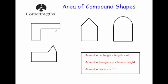To find the area of compound shapes, what you do is split them into their smaller shapes, find the area of each one, and then add them all together.